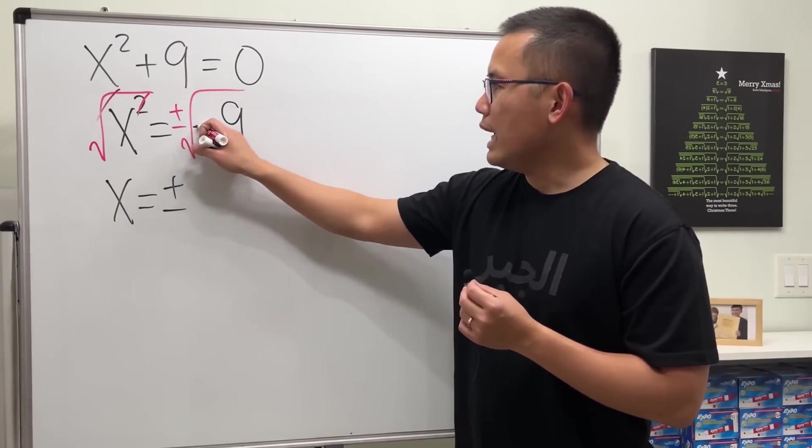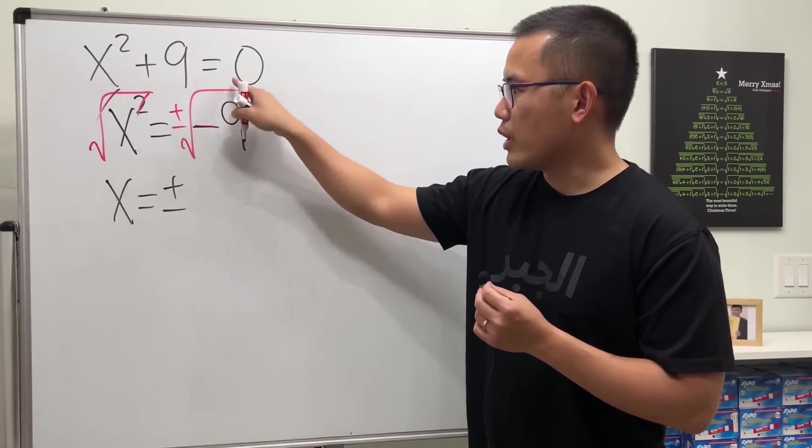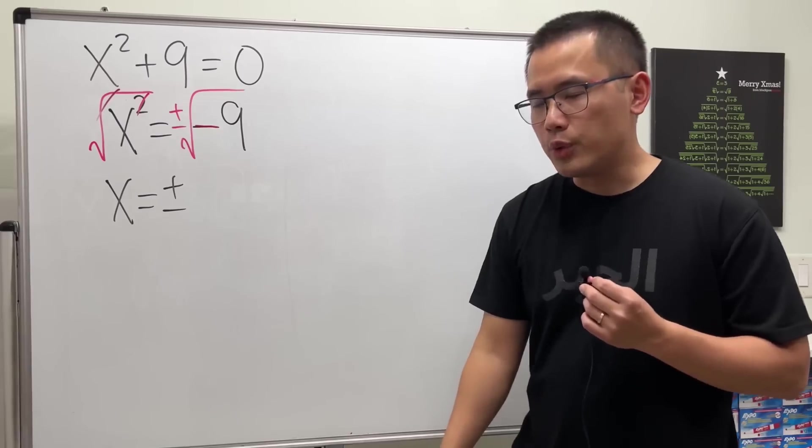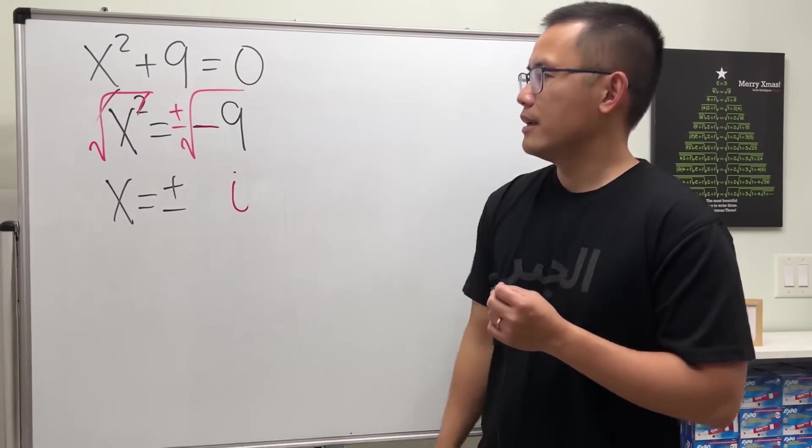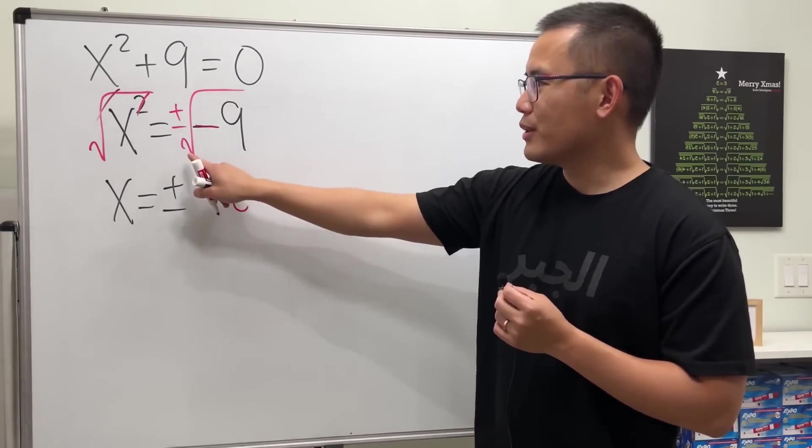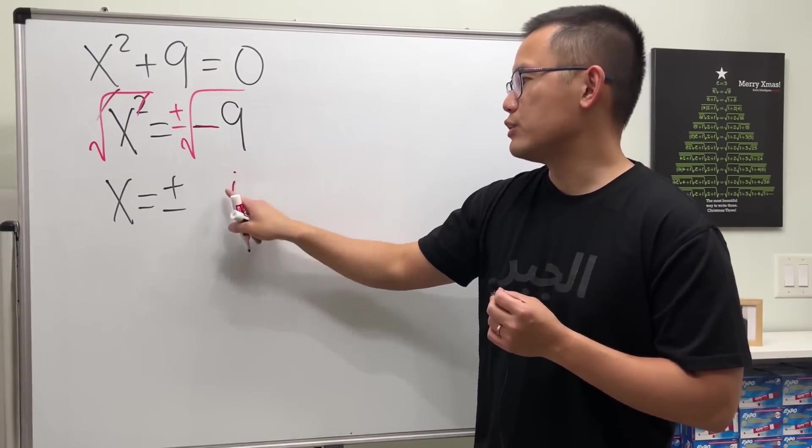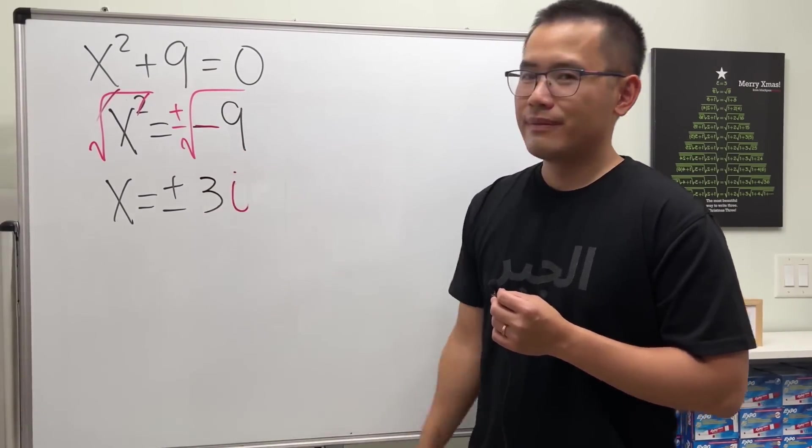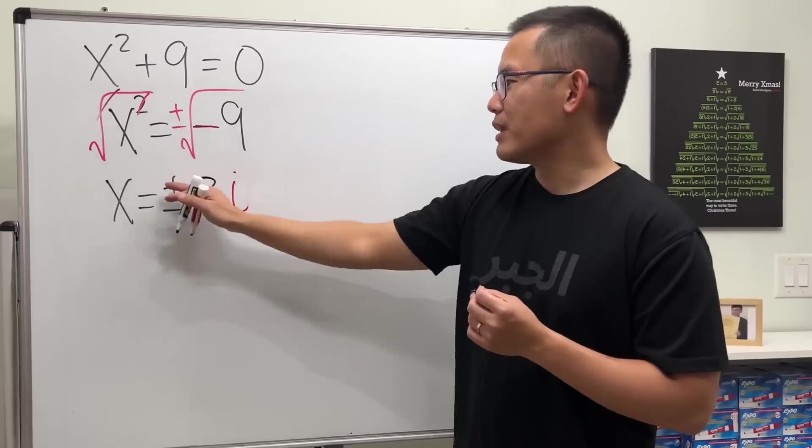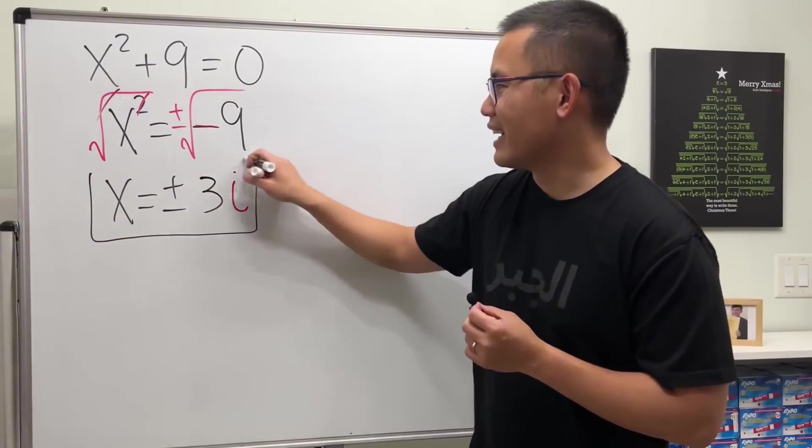Have a look. When we have a negative inside of the square root, we can use the imaginary unit, i. And then let's just go ahead and do square root of 9, which is just a regular 3. So, the answers are plus or minus 3i, and then we are done.